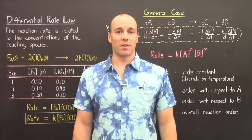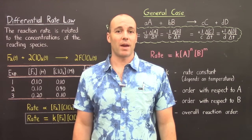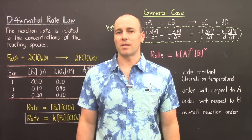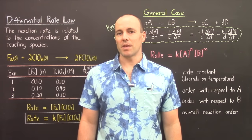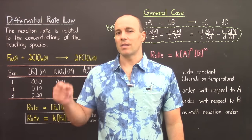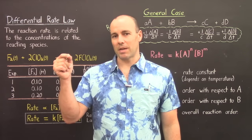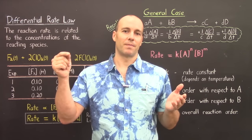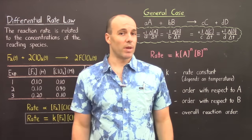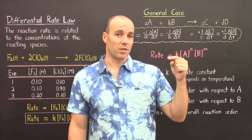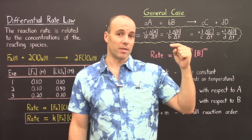In our previous lecture, we discussed the chemical reaction rate. You should remember that the rate is defined as a change in a quantity in a given amount of time. For example, the speed of a car can be measured and calculated as change in distance divided by change in time, so your units may be miles per hour. For the reaction rate, we're using change in concentration over change in time, and our units are molarity per second.